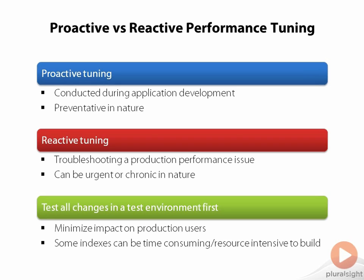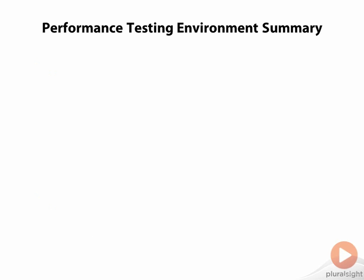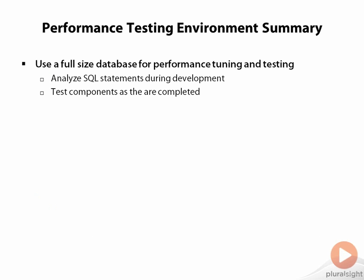This is especially important because if you have to do something like build a new index, or drop and recreate an index with new columns on a very large table, this can take a significant amount of time and system resources. We'd like to only do this once in production so as to minimize the impact on end users. In summary, we want to make sure that we have a full-size database available to us during the development and testing of our application. This gives us a place to analyze and tune SQL statements and test out the performance of components as they are finished, and we can be confident in the results because our test database accurately reflects our production data.